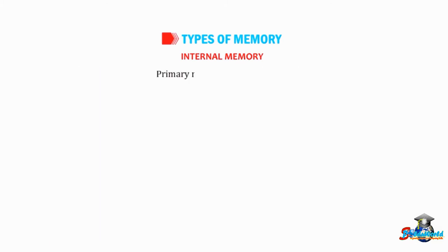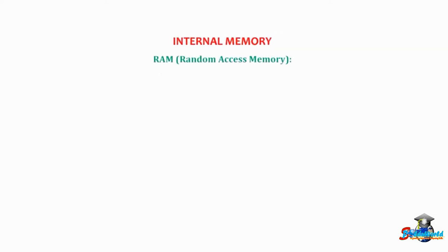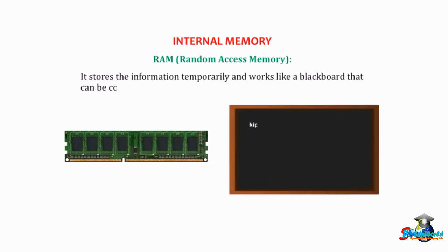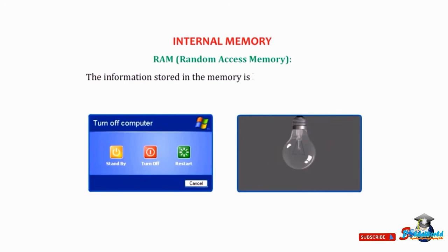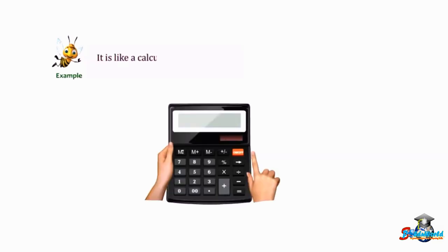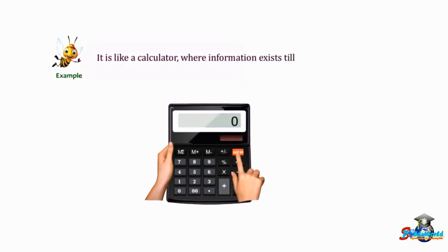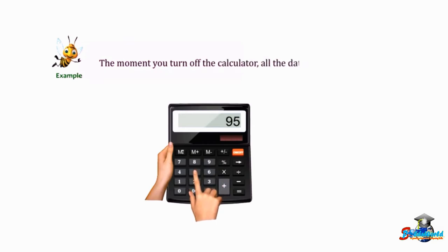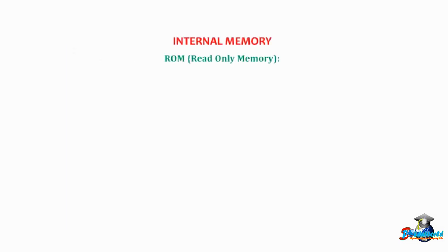Primary memory is of two types. RAM — Random Access Memory — stores information temporarily and works like a blackboard that can be constantly overwritten with new data. The information stored in RAM is lost when you turn off the computer or when the power goes off. For example, it is like a calculator where information exists only while the calculator is on; the moment you turn it off, all the data disappears.